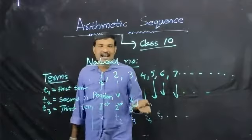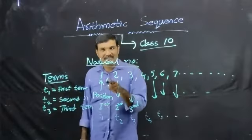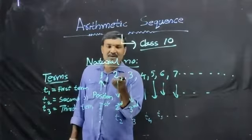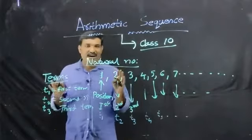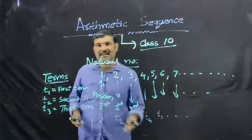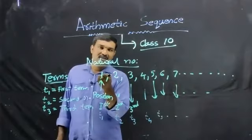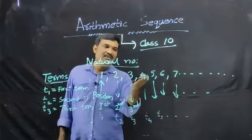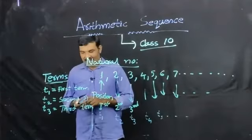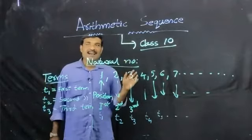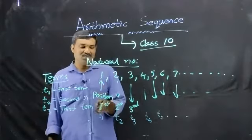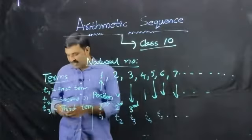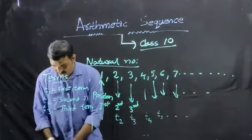Look at this sequence: the first term is one and the second term is two. You can obtain two by adding just one to one, so first term plus one gives you the second term. Similarly, you can obtain three by adding one to two. So there is a rule followed for writing these numbers — we simply add one to the first term to get the second term, and again add one to the second term to get the third, fourth, and so on.